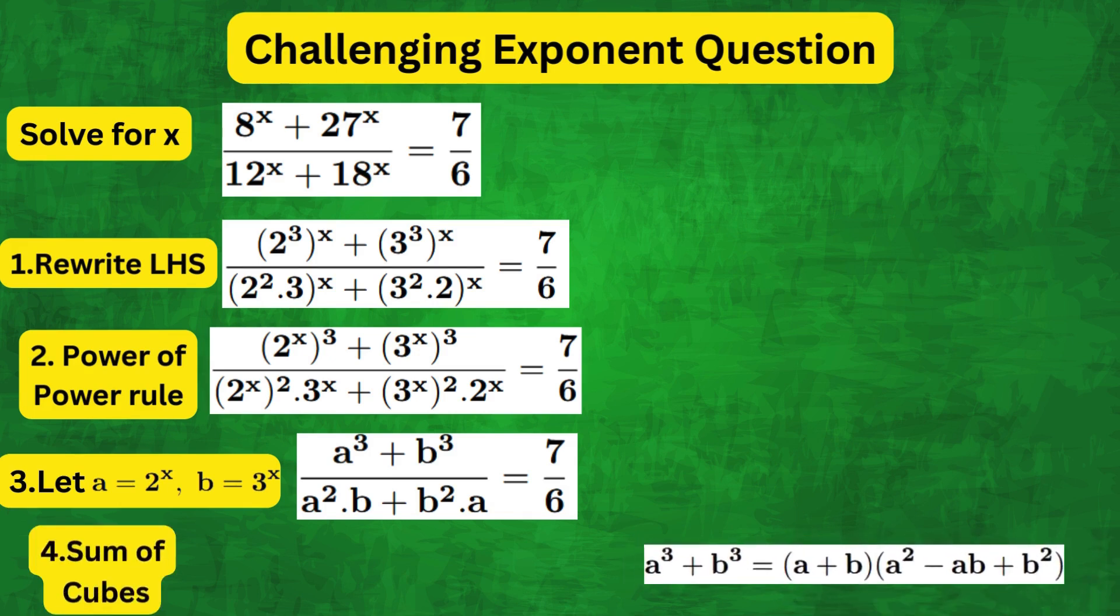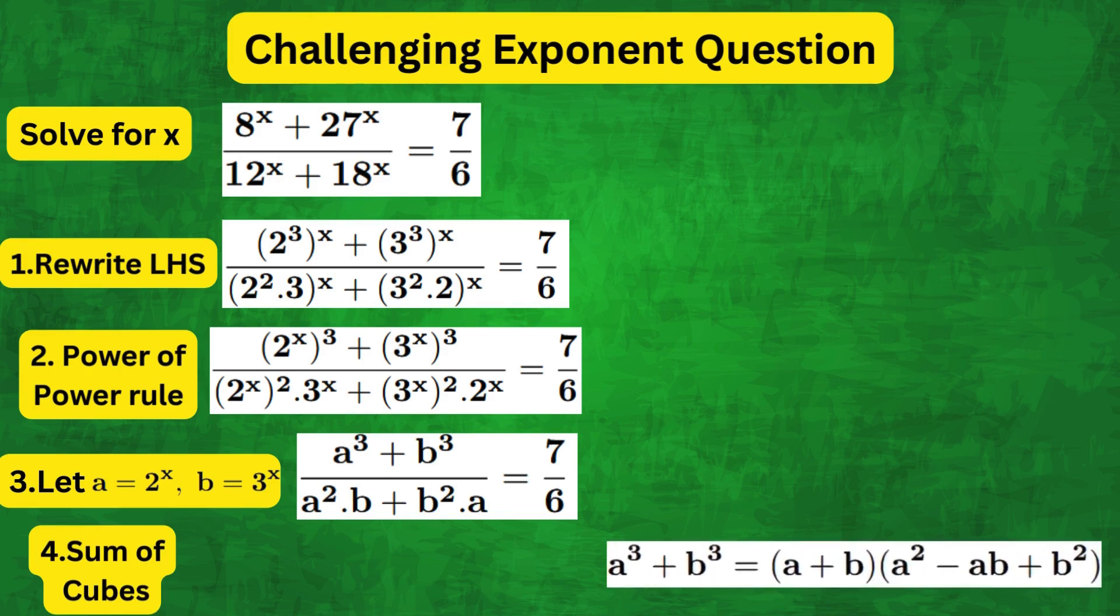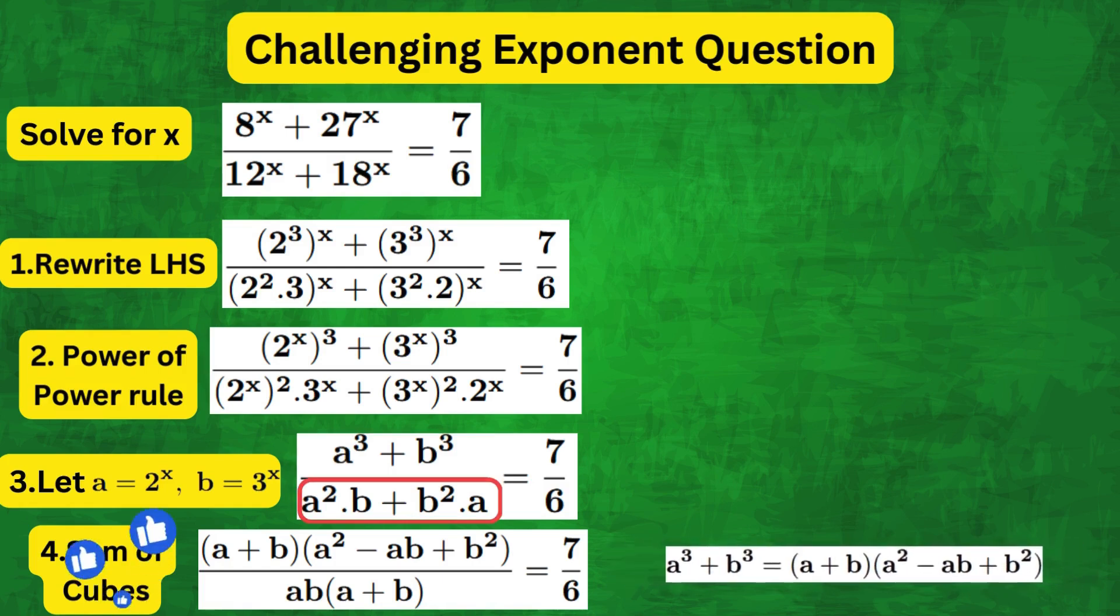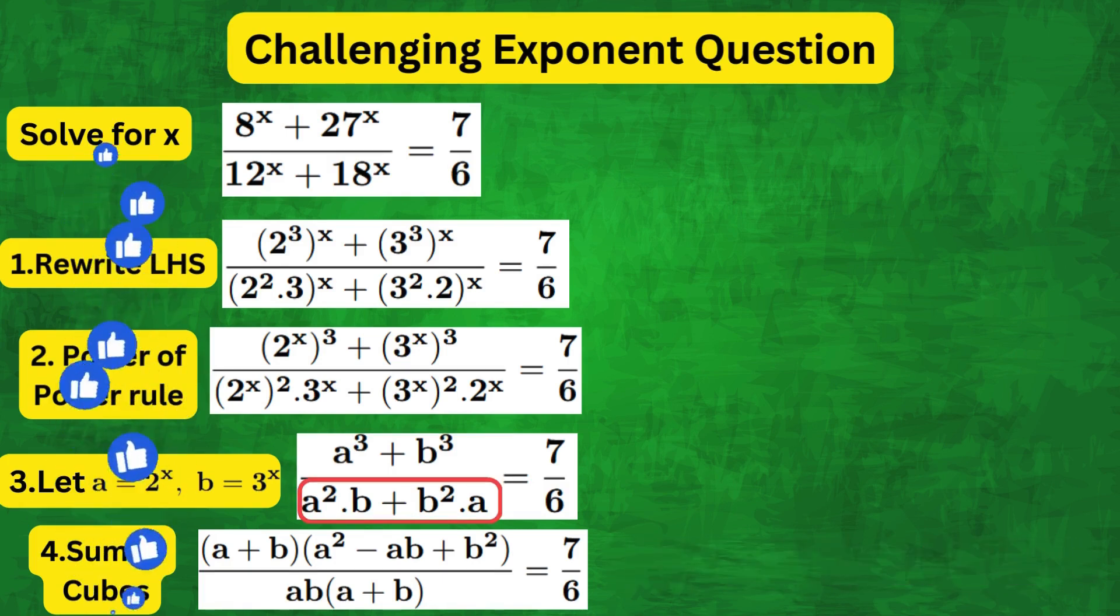Now we can use the sum of cubes identity to rewrite the numerator as a plus b times a squared minus ab plus b squared. And the denominator we can factorise as ab times a plus b.